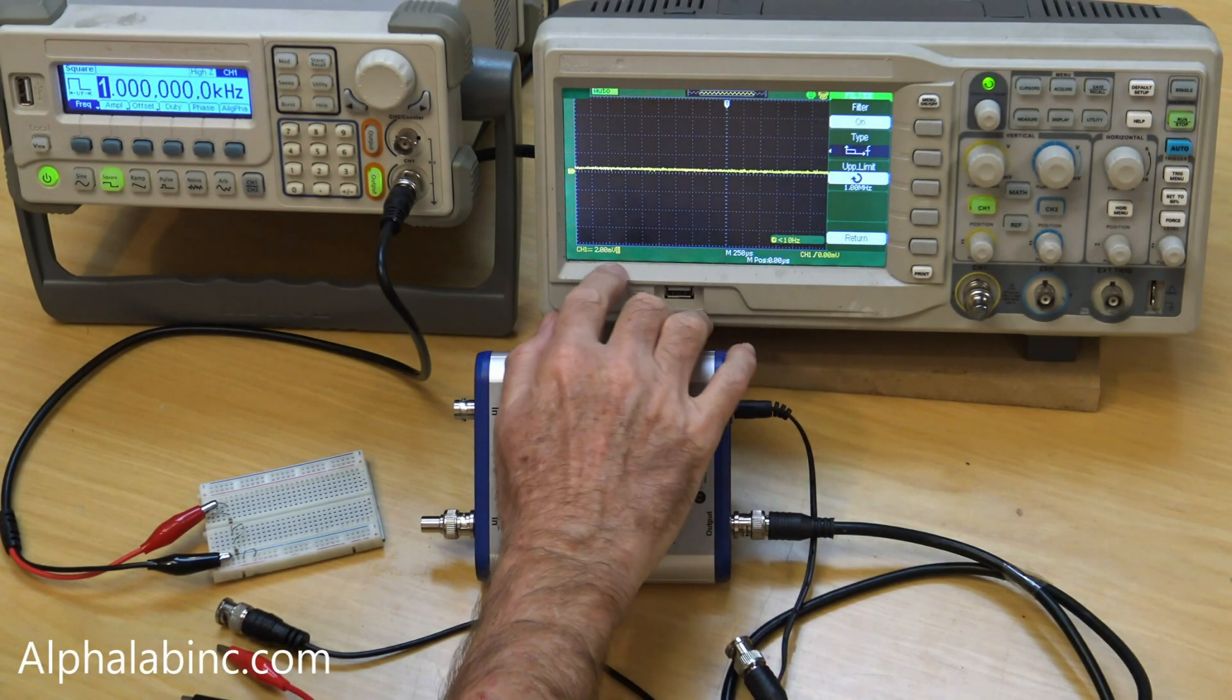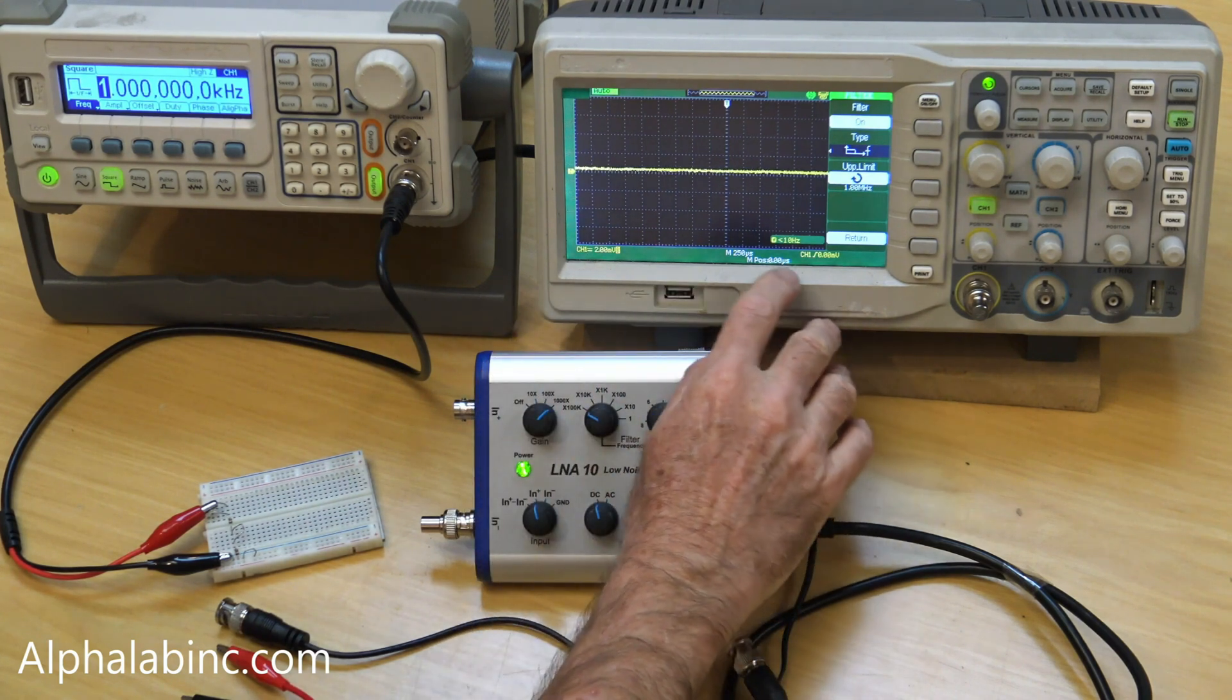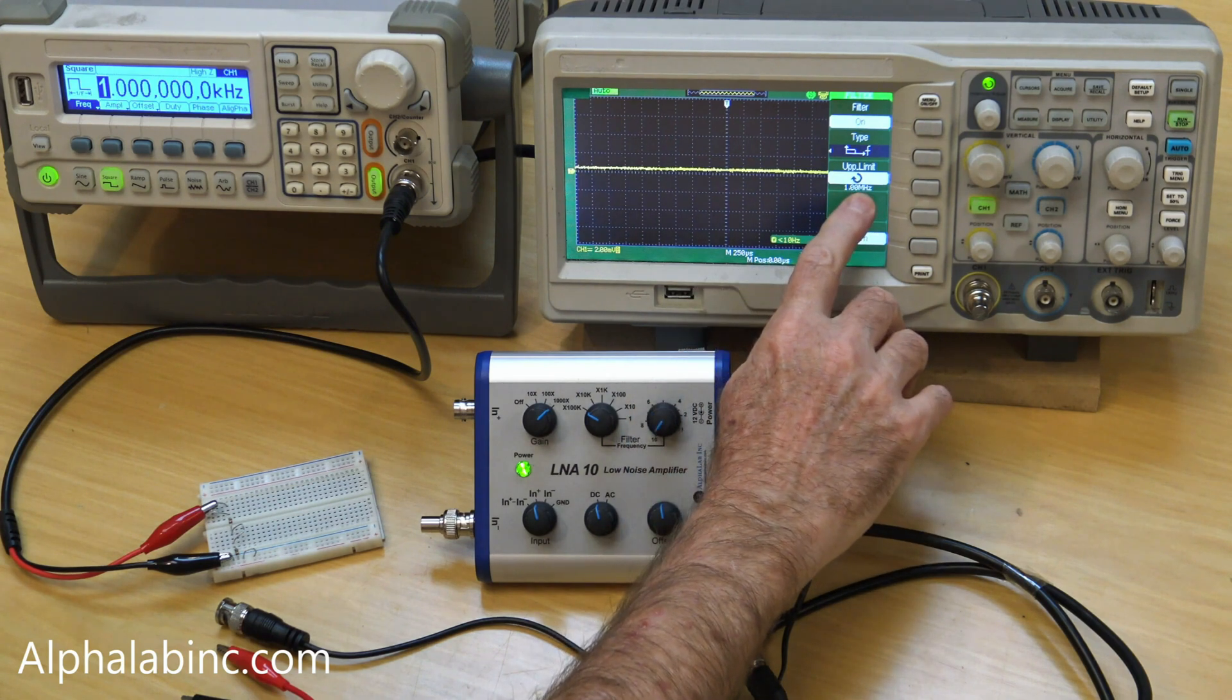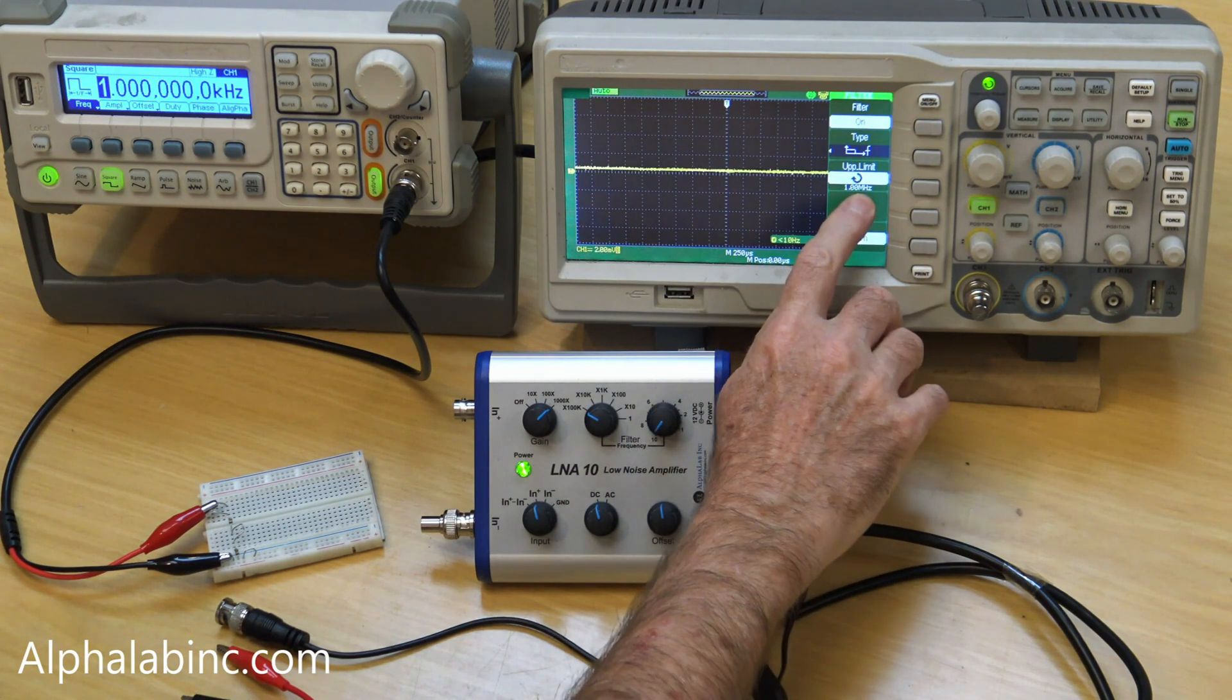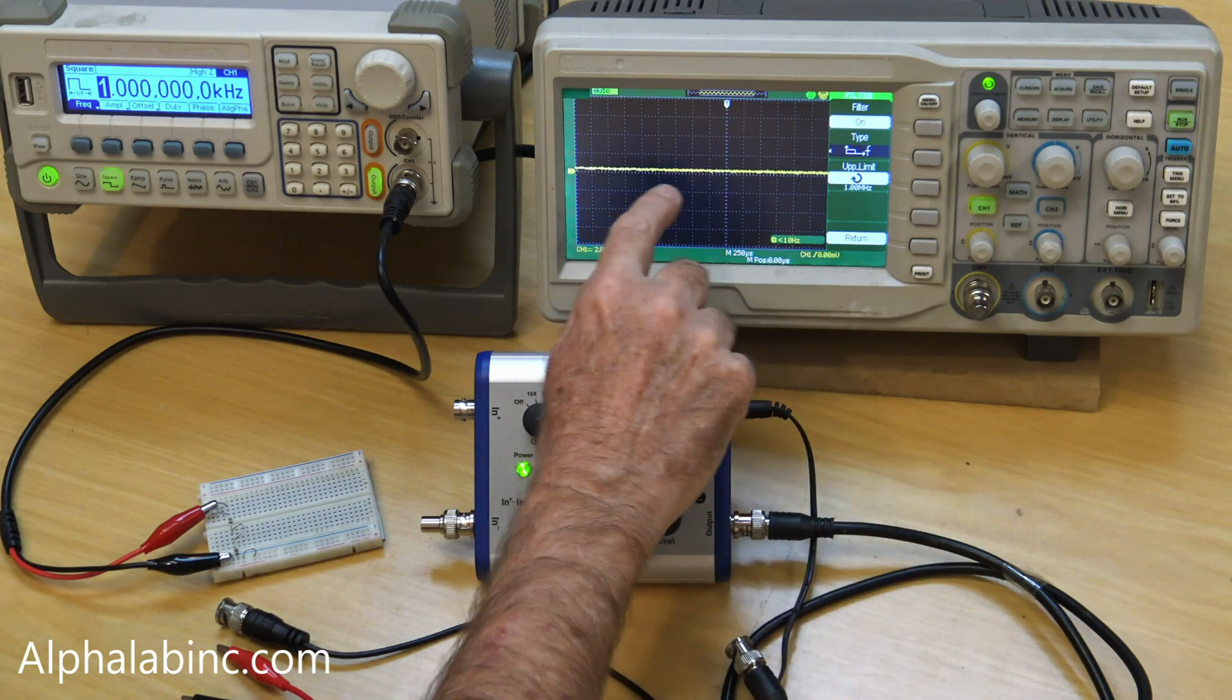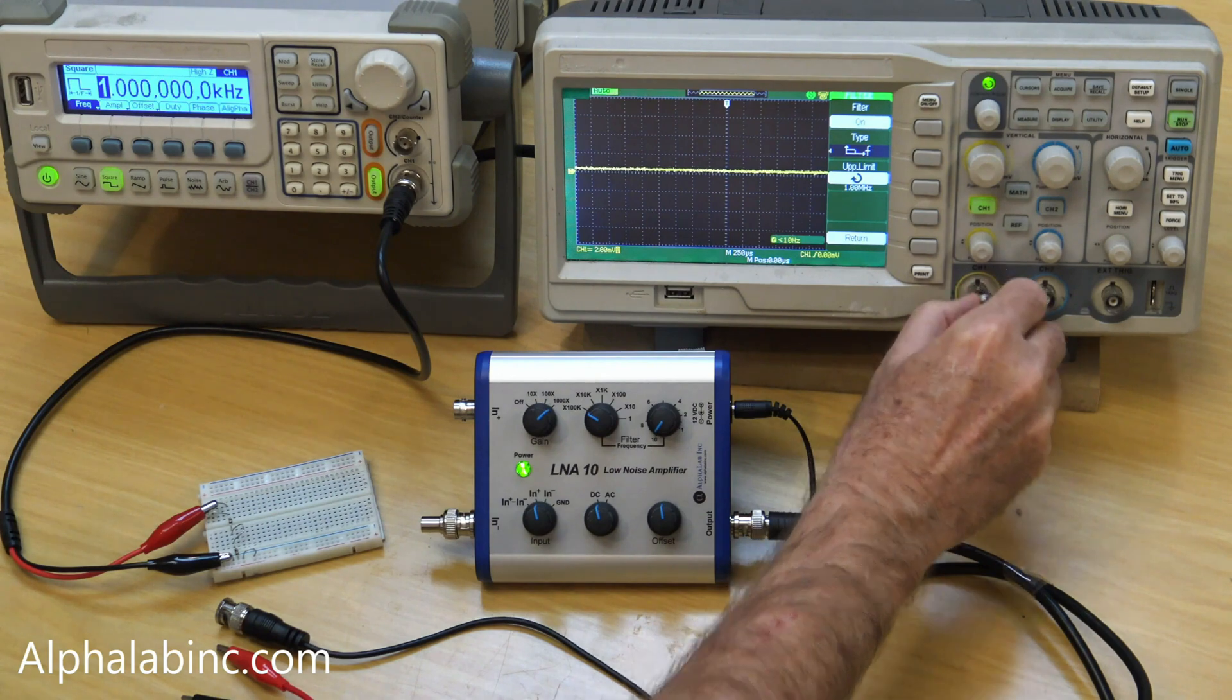Here's an oscilloscope set at its maximum gain. That's two millivolts per division. The horizontal is 250 microseconds per division. The low pass filter is set at one megahertz and I've got the input short-circuited. Obviously there's some noise around 100 microvolts.